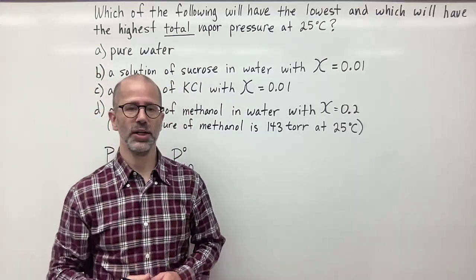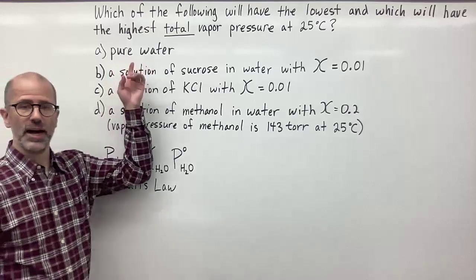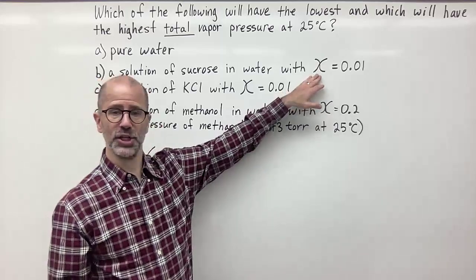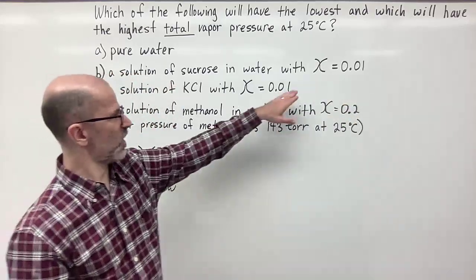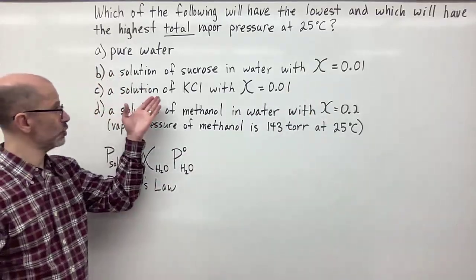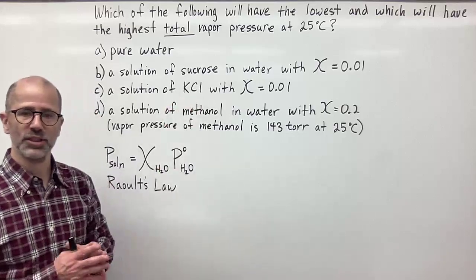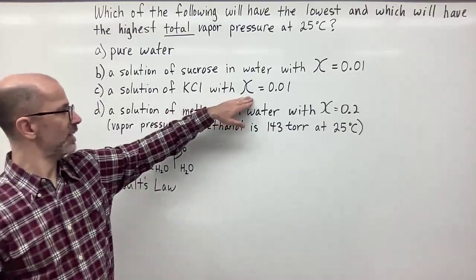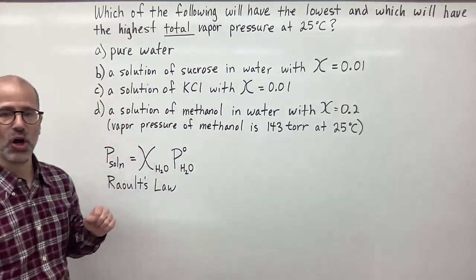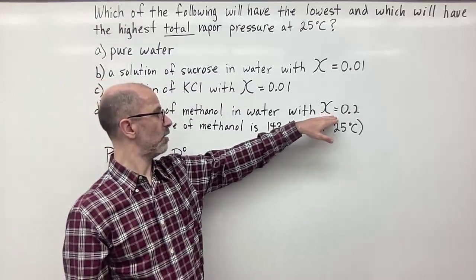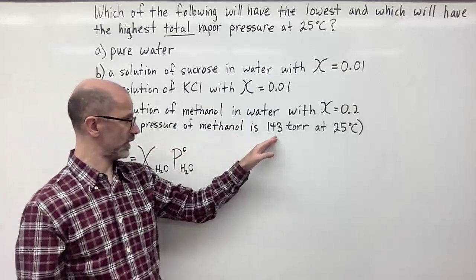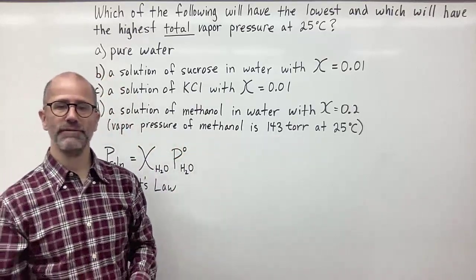First, let's look at the substances given. We have pure water. We have a solution of sucrose in water with a mole ratio (chi) of 0.01. Then we have a solution of KCl — an ionic substance that will dissociate in water — also with a mole ratio of 0.01. And finally, a solution of methanol in water with a mole ratio of 0.2. The vapor pressure of pure methanol is 143 torr at 25 degrees Celsius.